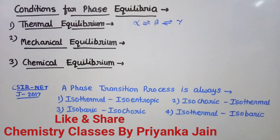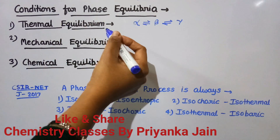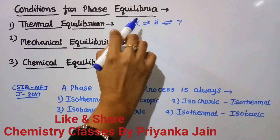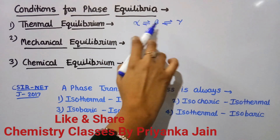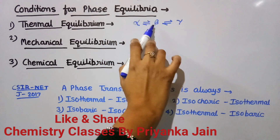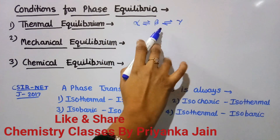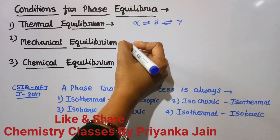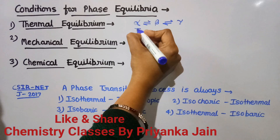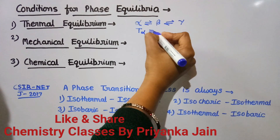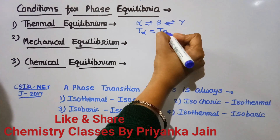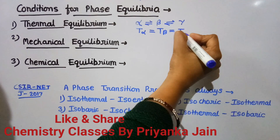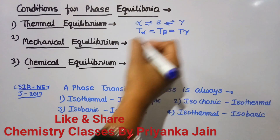Now let's see the conditions or criteria for phase equilibrium. The first criterion is thermal equilibrium: if three phases alpha, beta, and gamma are in equilibrium, then the temperature of all phases must be the same — T_α = T_β = T_γ. This is because if temperatures are not equal, heat will transfer between the phases.